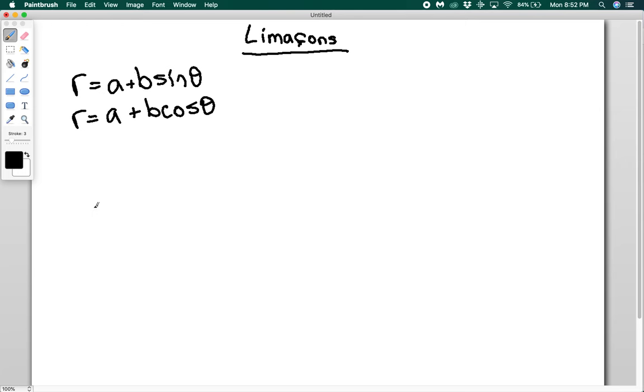So I'm going to draw four graphs here. One, two, three, four. So the first kind you can get is you can get something that has an inner loop like this. Here I get this kind of weird inner loop. You get an inner loop